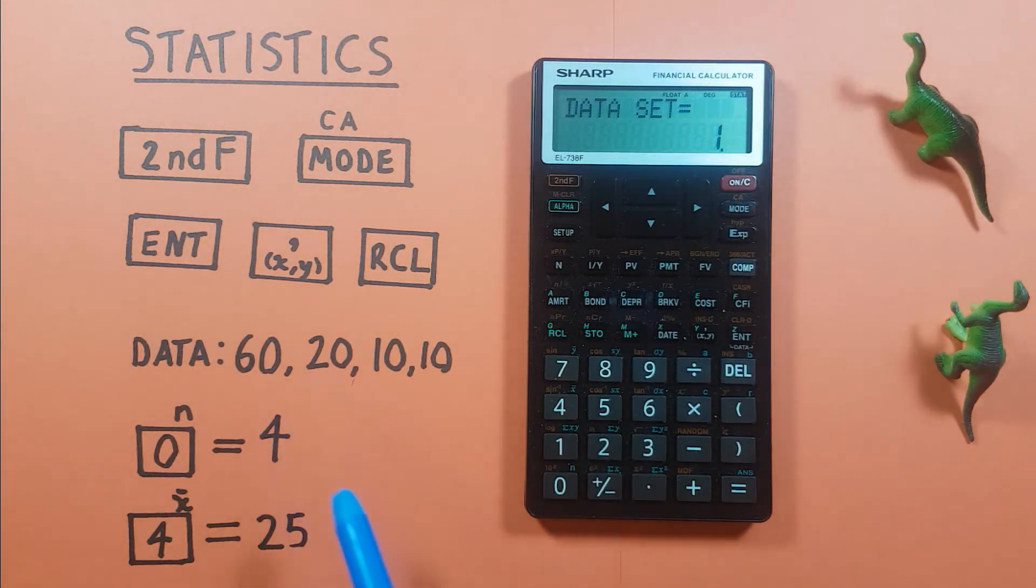Next we have 20. So we enter 20 and hit enter. There we go. Two items in our data set. And next we have 10. But we have 10 twice here. So what we can do is use the frequency to enter it in twice.